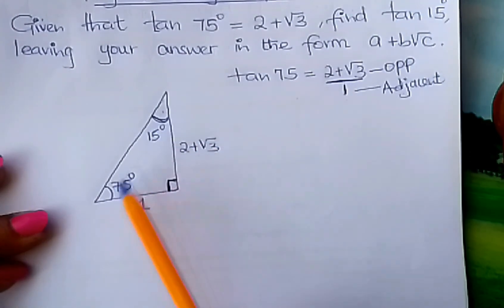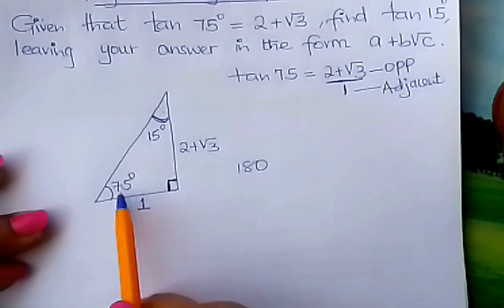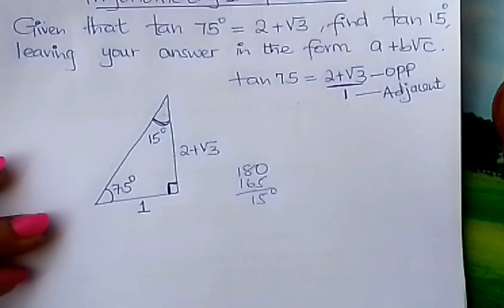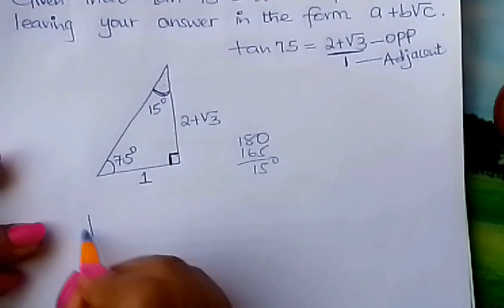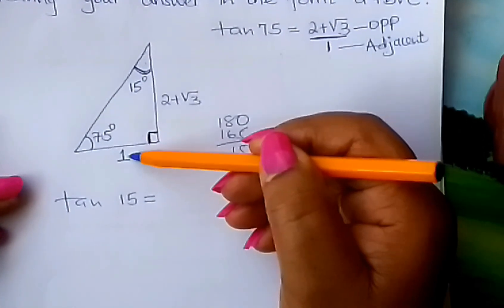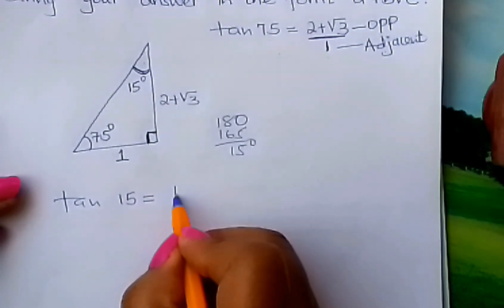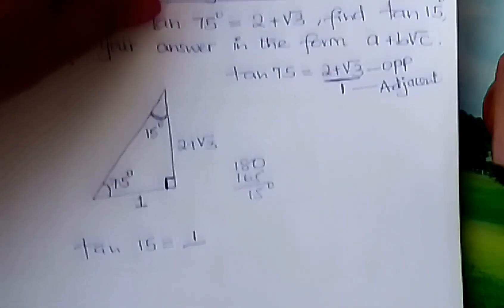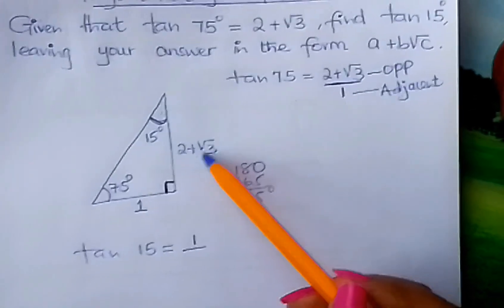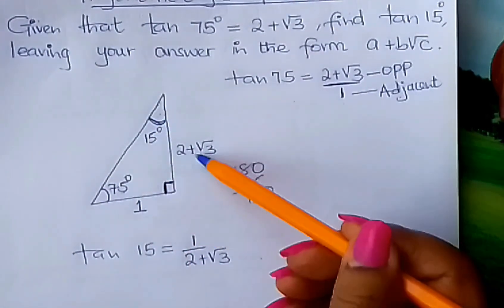Or you can go about it this way. Angles in a triangle add up to 180, and therefore, 180 minus 165 gives you 15°. From there, you are now told to find tan 15°. Tan 15° is equal to opposite over adjacent. Which is the opposite? It is this side. So tan 15° equals 1 over 2 plus root 3.